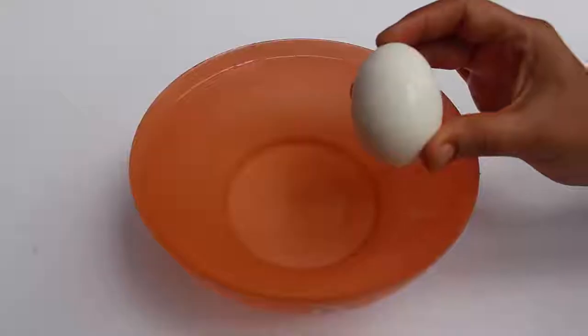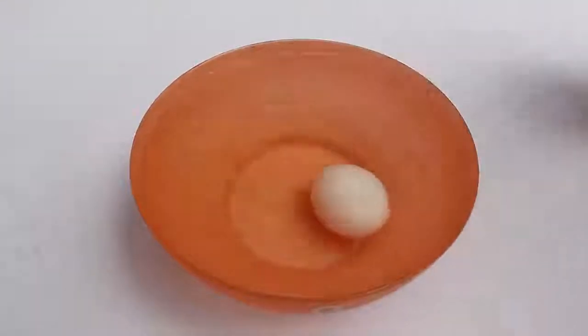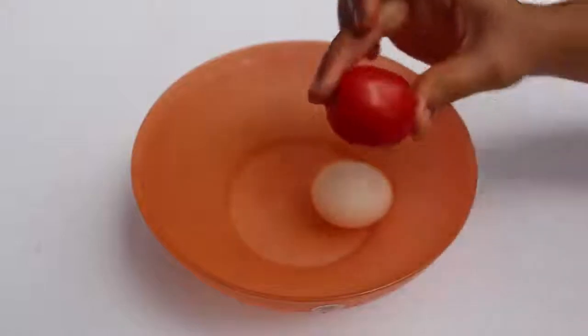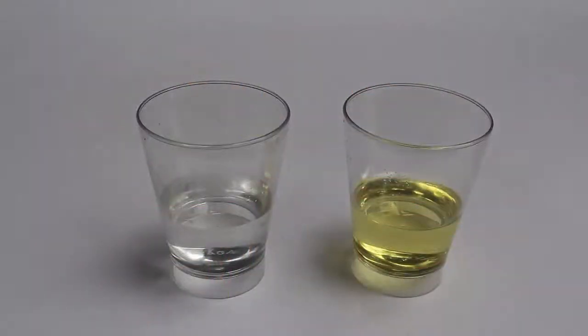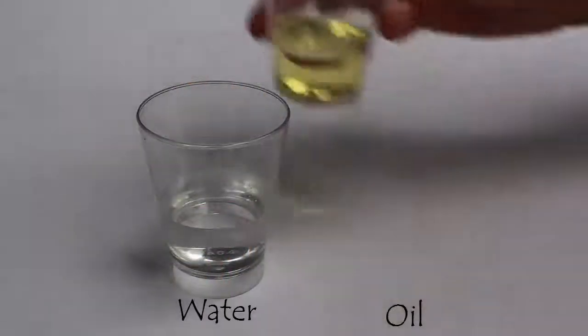Have you ever noticed how eggs sink in water but tomatoes float? Ice, which is made up of water, floats on water when it freezes. Why do you think that happens? Do they behave similarly in oil?